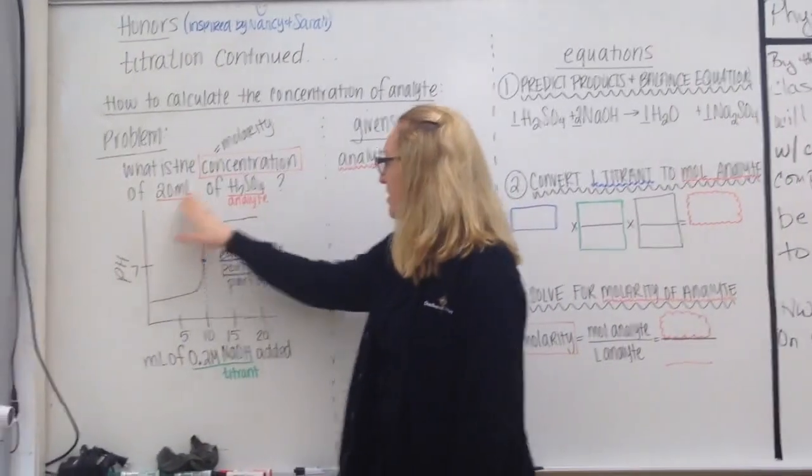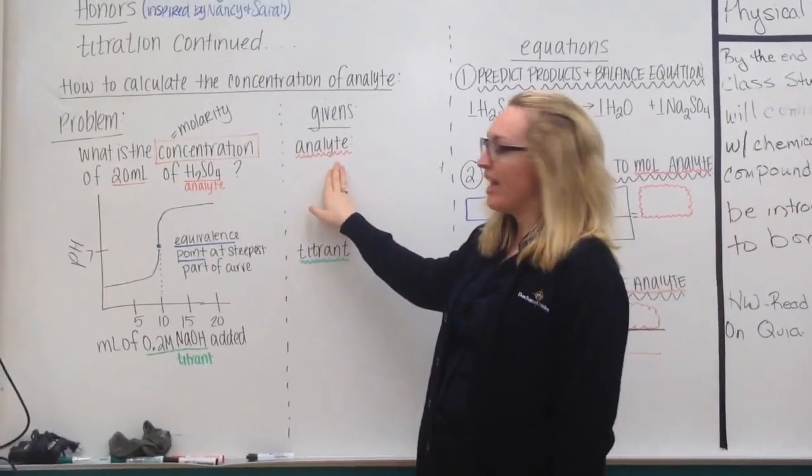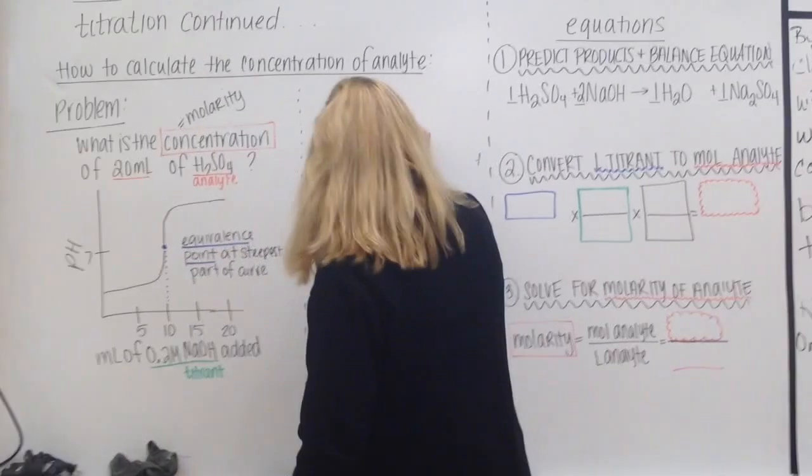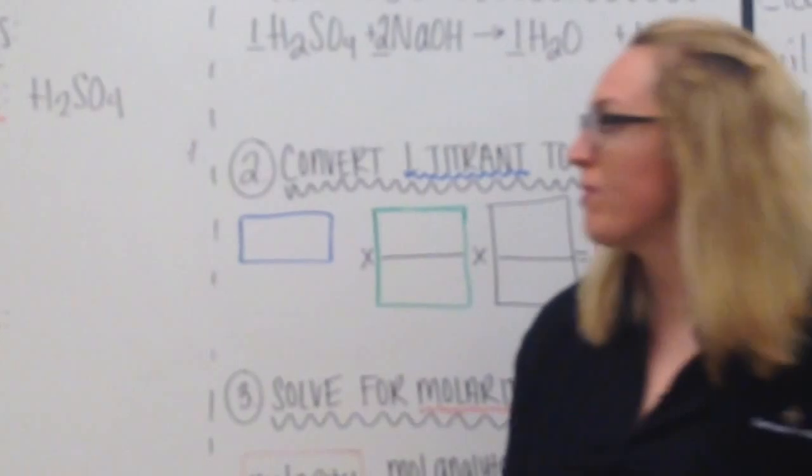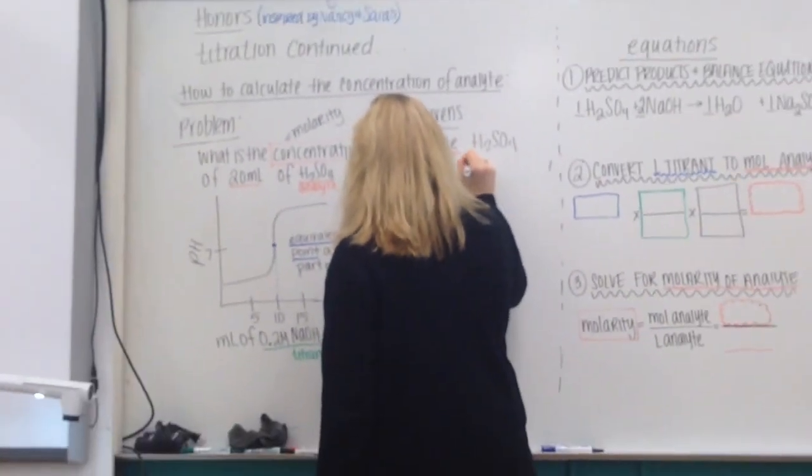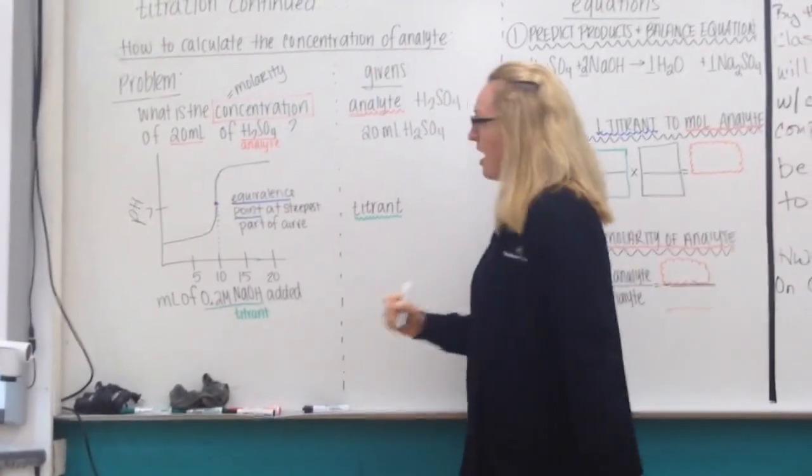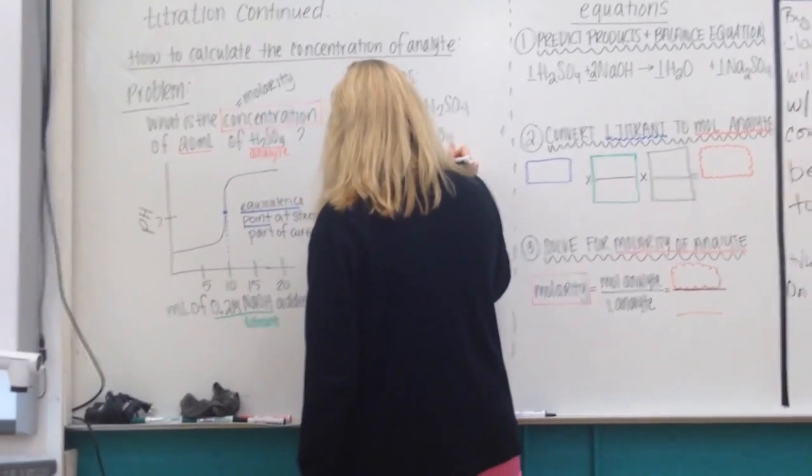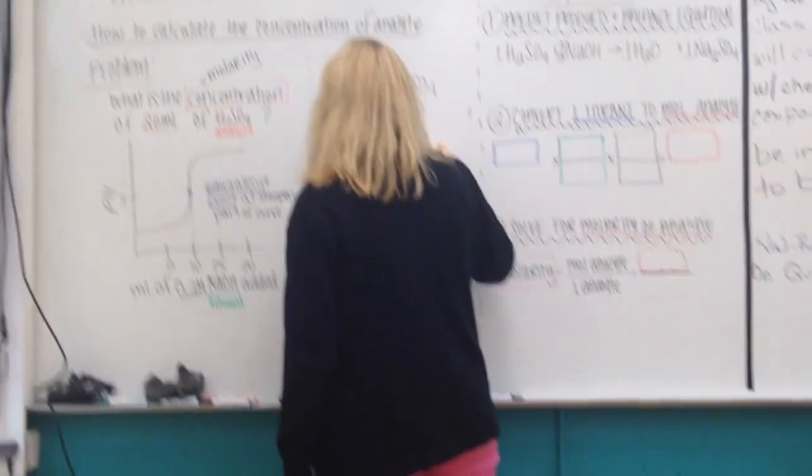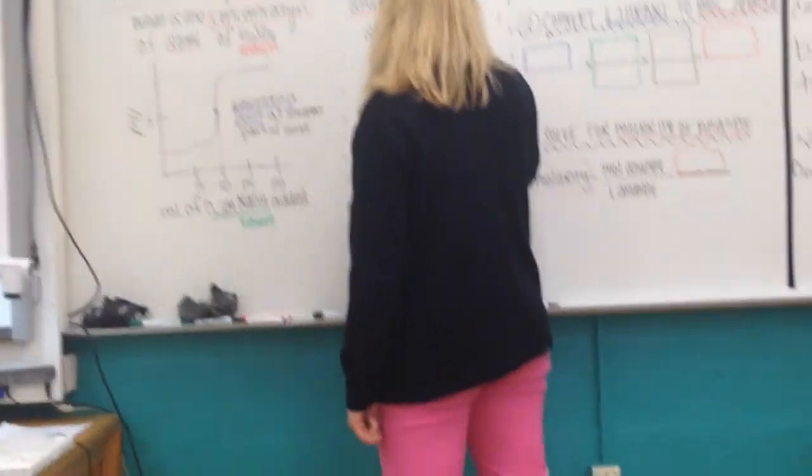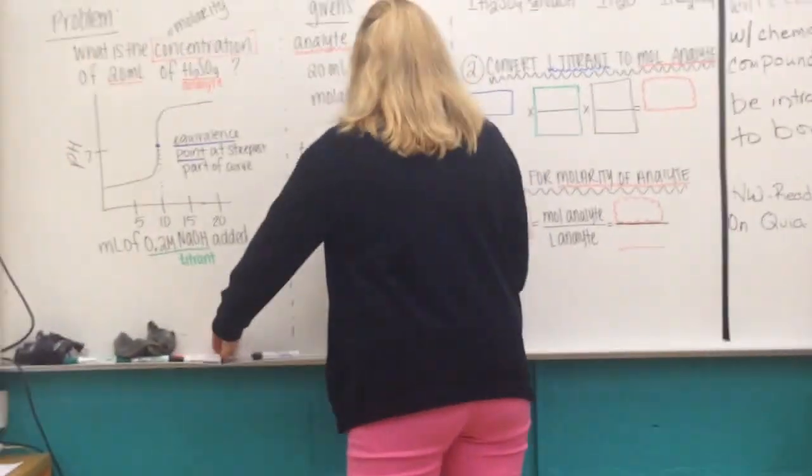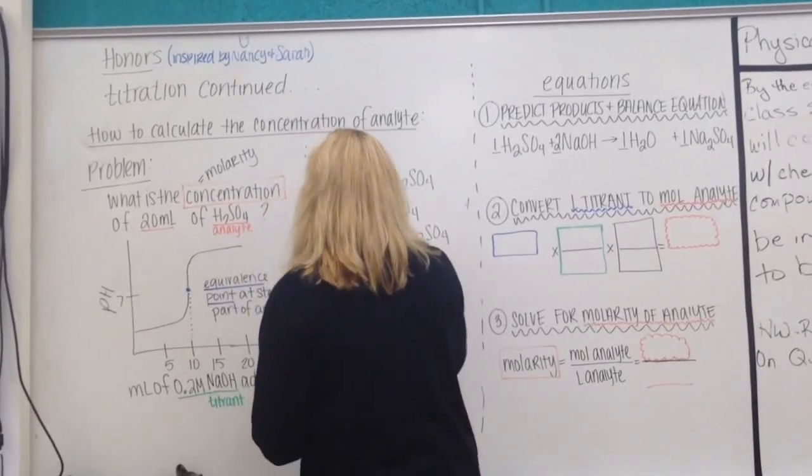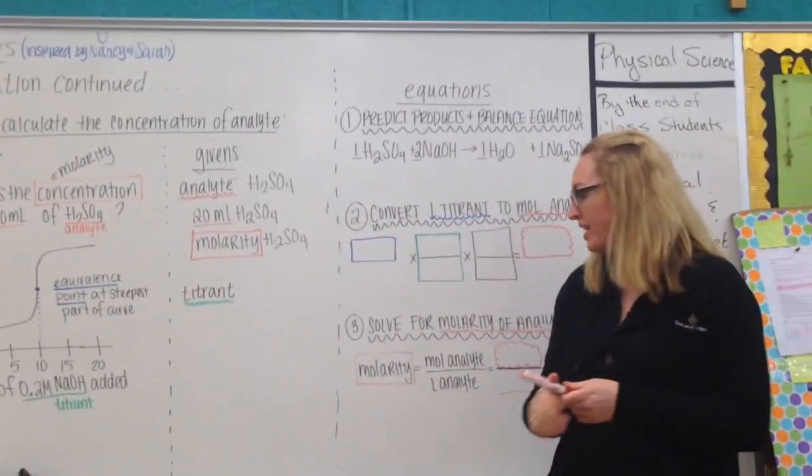What I'm given here to start with is some information about my analyte. I first know that my analyte is an acid, H2SO4. I'm also told from the problem that I have 20 milliliters of analyte. And the whole point of this problem is I'm trying to solve for the molarity of analyte. That is given in the prompt of this question. First study givens.